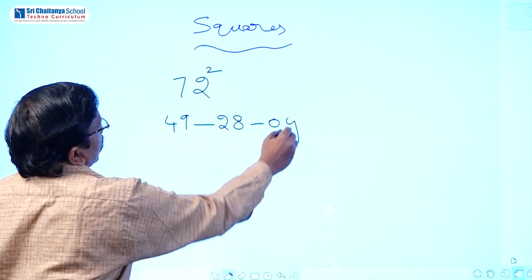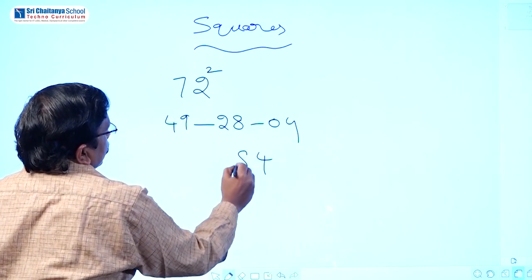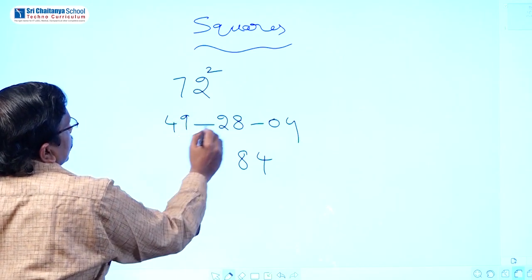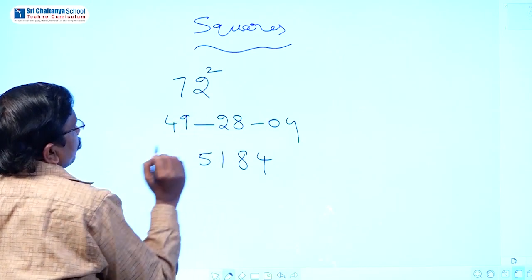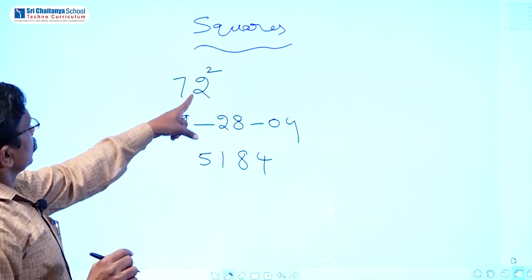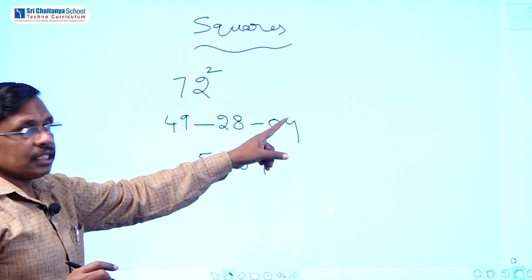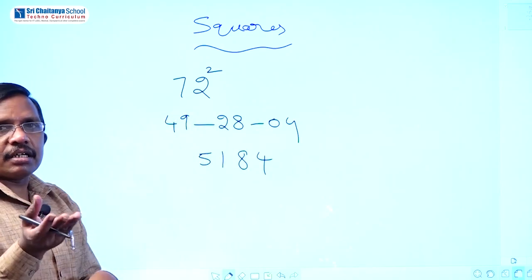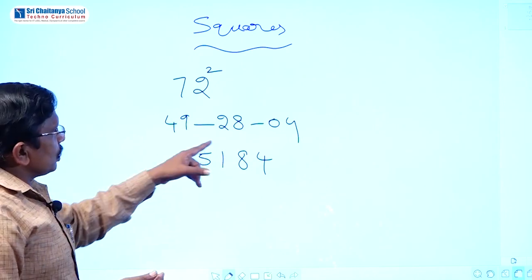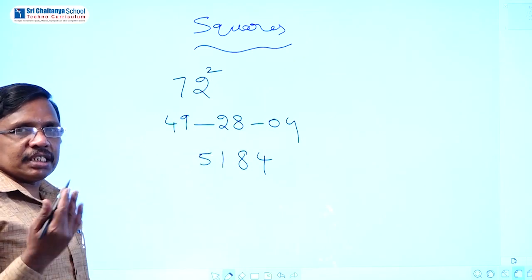After balancing: 4 as it is, then 0 plus 8 equals 8, then 2 plus 9 equals 11, carry 1, so 4 plus 1 equals 5. So 72 squared equals 5184. Step by step you can increase speed, and after practising, do the balancing in your mind too.